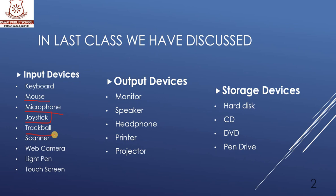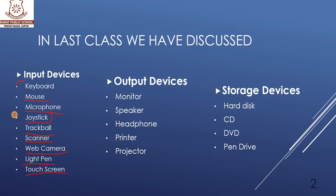Next is webcam — we can capture photos or videos on a computer. Light pen is mainly used to draw pictures. Touch screen is used to select objects, type letters, and draw pictures. These all are the input devices.